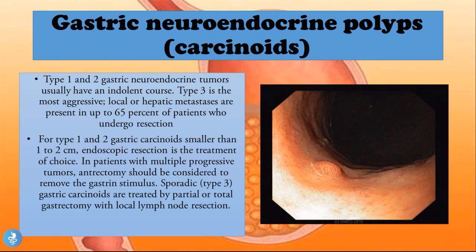For type 1 and type 2 gastric carcinoids smaller than 1 to 2 centimeters, endoscopic resection is the treatment of choice. In patients with multiple progressive tumors, antrectomy should be considered to remove the gastrin stimulus. Type 3 sporadic gastric carcinoids are treated by partial or total gastrectomy with local lymph node resection.